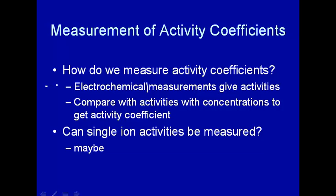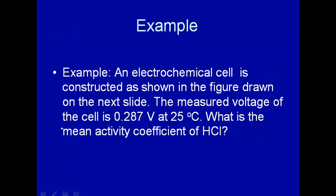An easy way to do that is to use electrochemical measurements, because electrochemical measurements give you activities directly. You figure out how much concentration you had to add to the electrochemical cell to get that activity, and then the ratio of those will just be the activity coefficient. Let's do an example.